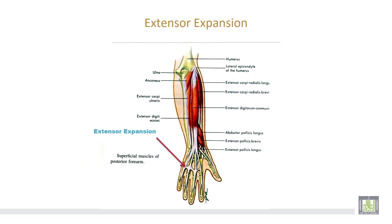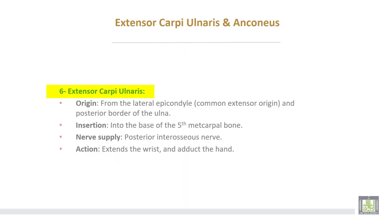Each extensor expansion is divided into three slips: the median slip attaches to the base of the middle phalanx, while the two lateral slips converge and unite to be inserted into the base of the terminal phalanx of the medial four fingers. Extensor carpi ulnaris takes origin from the lateral epicondyle, common extensor origin, and the posterior border of the ulna; inserted into the base of the fifth metacarpal bone. Nerve supply from the posterior interosseous nerve; action extends the wrist and adducts the hand.